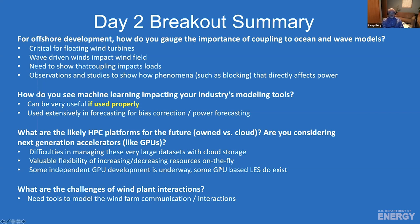There was a question about how machine learning might impact industry modeling tools. The general sentiment was that it can be very useful if used properly — which is true of many statistical methods, where it's easy to use them incorrectly. This could even be the case with a full physics model; it's important to know your tool and understand its caveats. Machine learning is already used extensively in forecasting for bias correction, power production, and power forecasting.